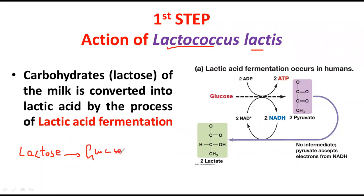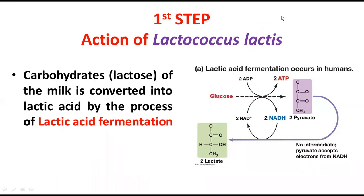Because there is a low level of oxygen, fermentation takes place. The glucose derived from lactose is converted into lactic acid. So in the first step, the lactose of the milk is converted into lactic acid by the process of lactic acid fermentation, carried out by Lactococcus lactis. This lactic acid starts accumulating inside the milk.